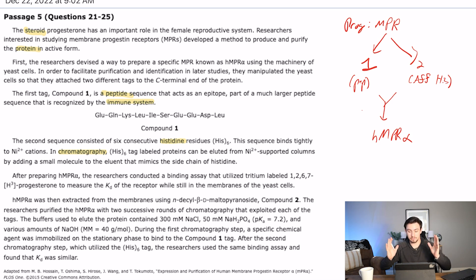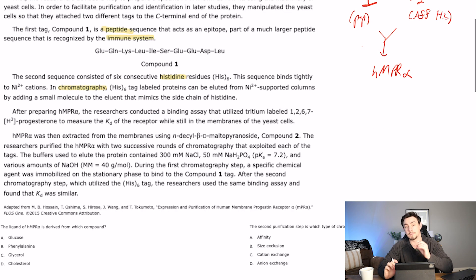So their second method of purification is affinity with histidine molecules. Histidine affinity chromatography. Okay, so now this is completely prepared. We mixed all the ingredients, and we get our cake. So HMPR alpha.